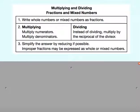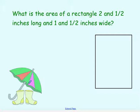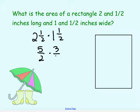What's the area of a rectangle 2 and a half inches long and 1 and a half inches wide? We need to multiply 2 and a half times 1 and a half. We put them into improper fractions: 5 halves times 3 halves. So the area is 15 over 4 inches squared — or 3 and 3 fourths inches squared.